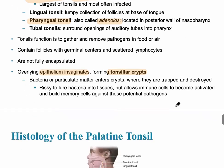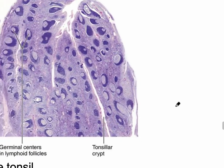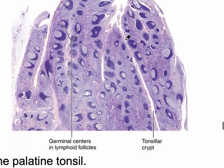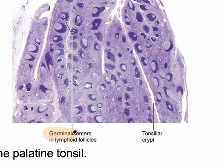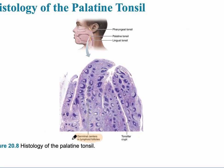Looking at the palatine tonsil histology, the outer layer is the epithelium, which is non-keratinized stratified squamous epithelium. This is important because this area can sustain damage at the beginning of the oral cavity — it has many layers, but since it's inside the body, it lacks the protein keratin. At the bottom of the slide, we can see the germinal cells in the lymphoid follicles, also called nodules, which are very dense in the tonsils.